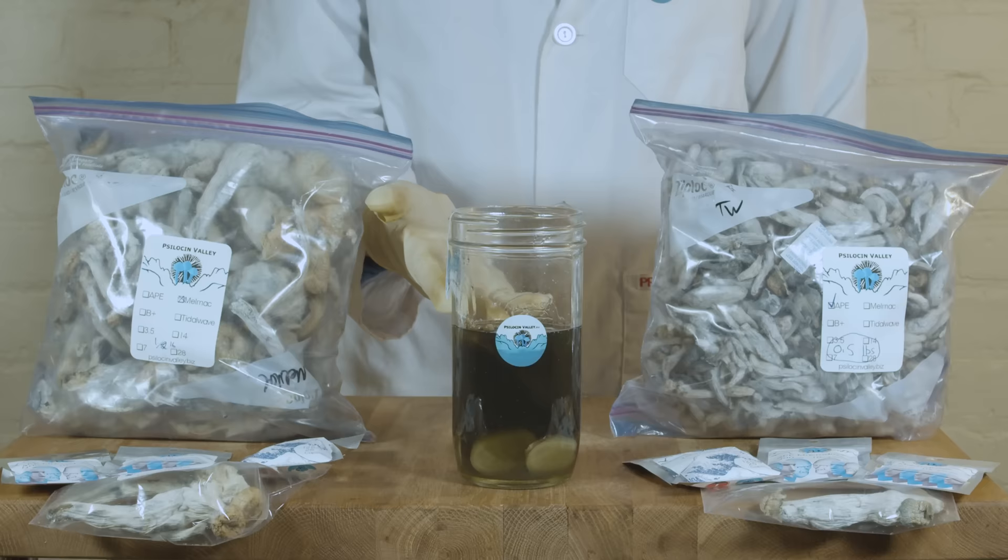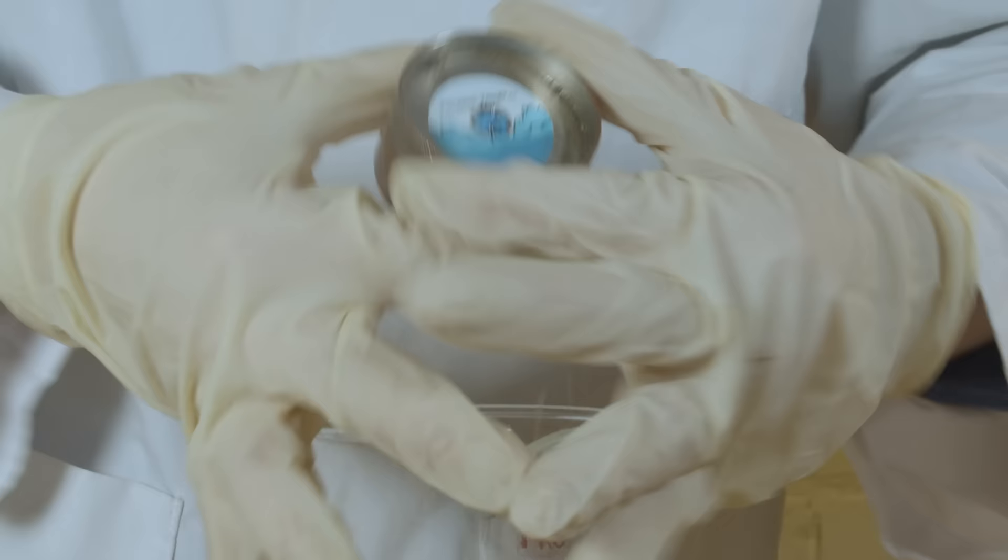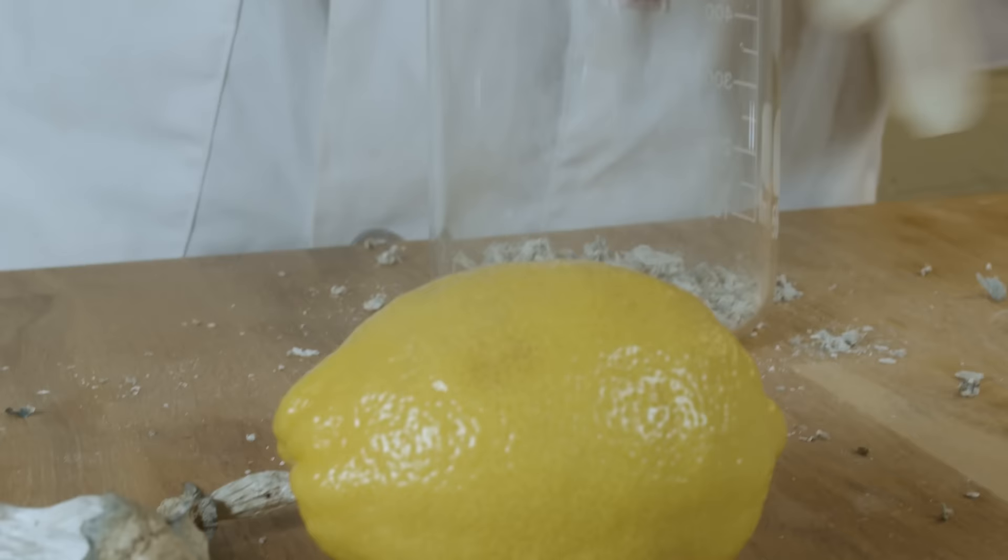The stomach issues are partly due to the hard-to-digest chitin in the mushroom cell walls. You can avoid having to digest most of this chitin by extracting the psilocybin with a solvent. In normal words, making tea.